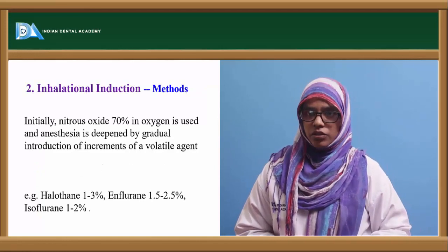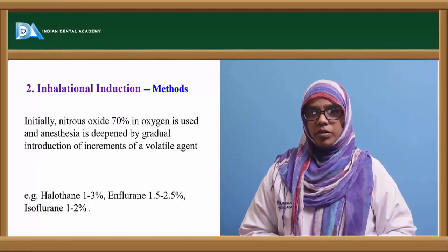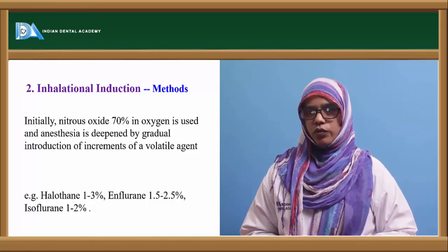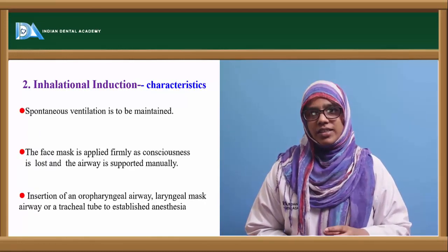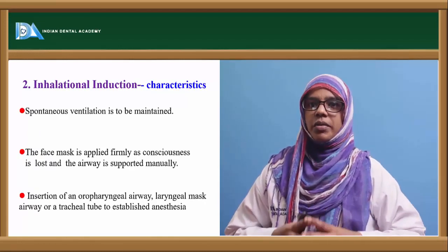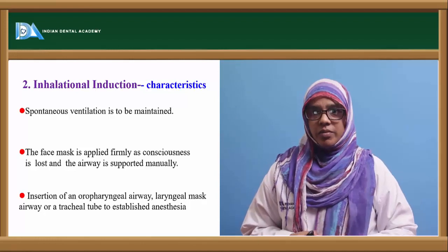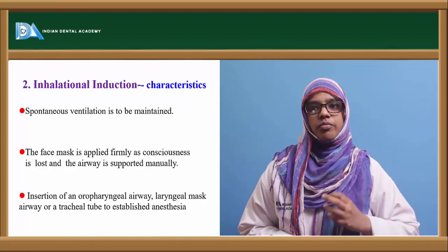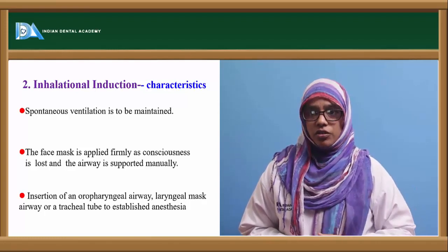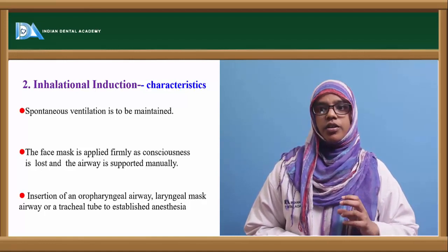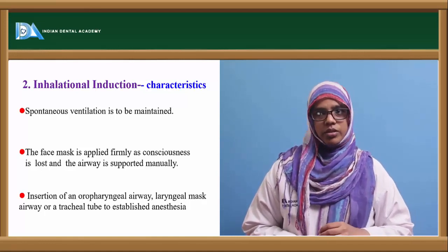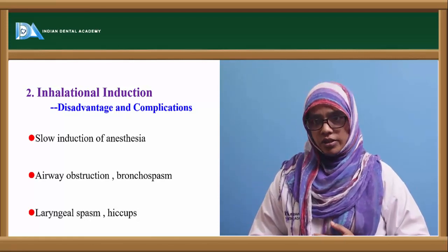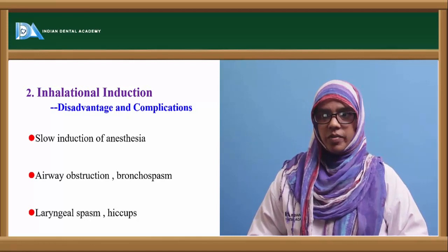In inhalation induction, nitrous oxide 70% is used with oxygen, and anesthesia is deepened by gradual incremental introduction of a volatile agent like halothane, isoflurane, or desflurane. Spontaneous ventilation must be maintained. The face mask is applied firmly and consistently until consciousness is lost, and the airway is supported manually, followed by insertion of an oropharyngeal airway, laryngeal mask airway, or tracheal tube to establish anesthesia. Disadvantages include slow induction, airway obstruction, bronchospasm, laryngospasm, and hiccups.